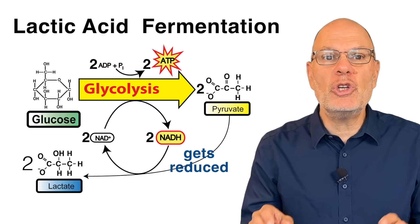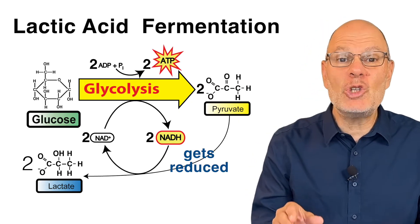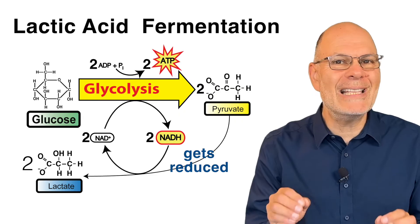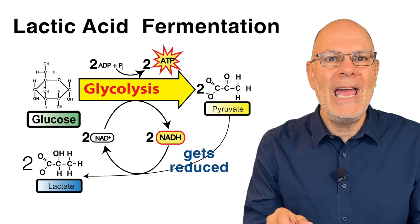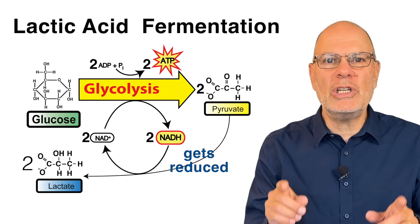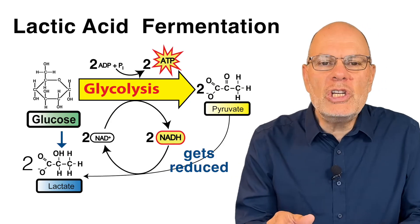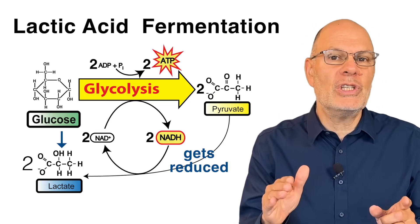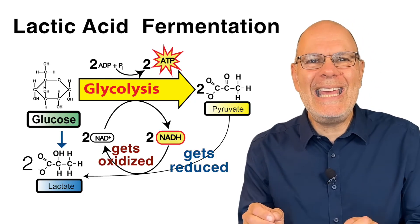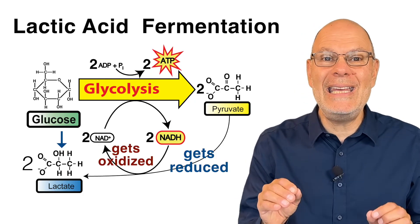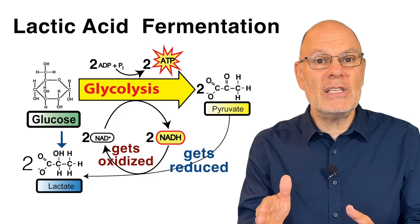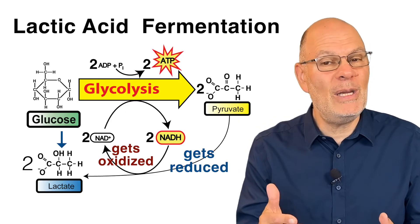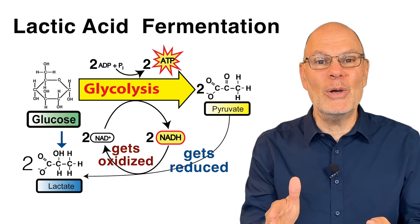Remember that reduction is the gain of electrons. In biology, those electrons are usually attached to a hydrogen atom. The reduced product of that reduction is lactic acid or lactate, and you can see the added hydrogen right here. Reduction is always paired with oxidation, and as pyruvate is being reduced to lactic acid, NADH is being oxidized to NAD+. With NAD+ available, glycolysis can continue to generate its two ATPs per molecule of glucose.